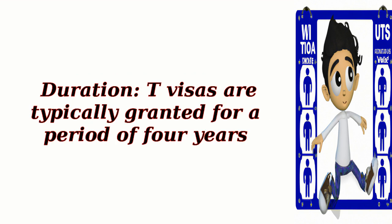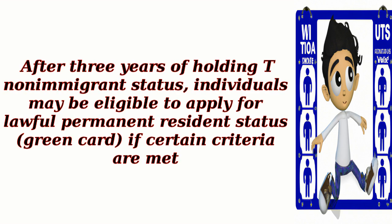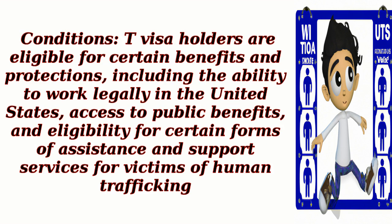T-Visas are typically granted for a period of four years. After three years of holding T-Non-Immigrant Status, individuals may be eligible to apply for lawful permanent resident status, or Green Card, if certain criteria are met. T-Visa holders are also eligible for certain benefits and protections, including the ability to work legally in the United States, access to public benefits, and eligibility for certain forms of assistance and support services for victims of human trafficking.